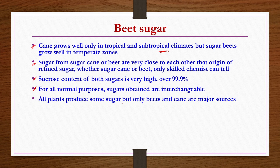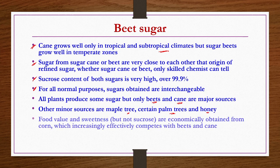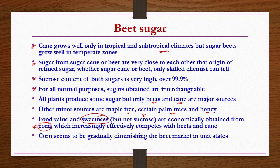In general, all plants produce some amount of sugar, but only beets and canes are major sources because the sucrose content is very high. In other plants, sucrose content may not be high enough for industrial processing. Some other minor sources include maple tree, certain palm trees, and honey. Food value and sweetness are also economically obtained from corn as well, and we are going to discuss how to get corn sweeteners after studying beet sugar. Corn seems to be gradually diminishing the beet market, especially in the United States of America, and we will list out the reasons.